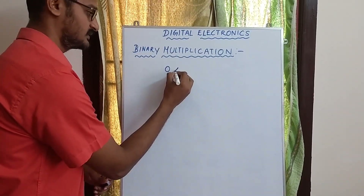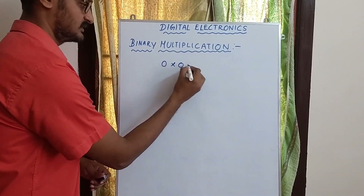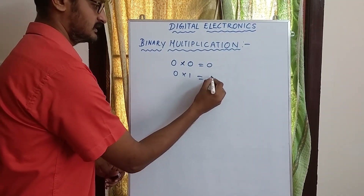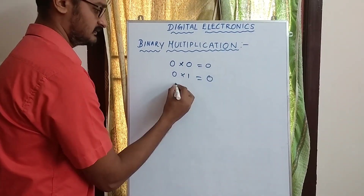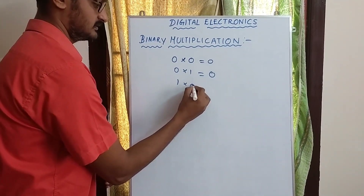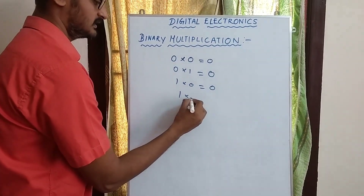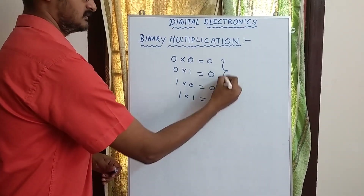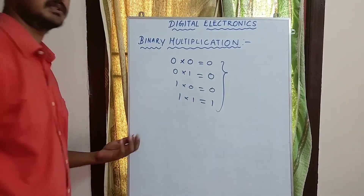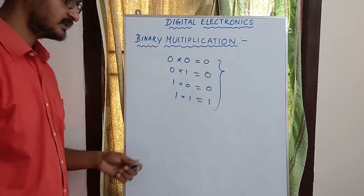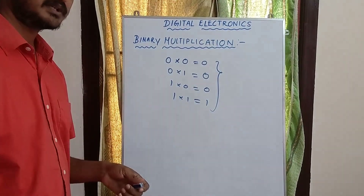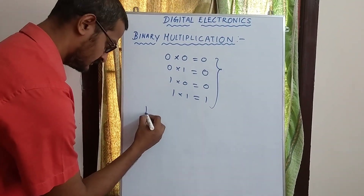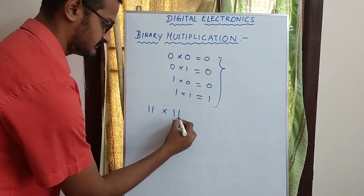The basic binary multiplication rules are: 0 into 0 is 0, 0 into 1 is 0, 1 into 0 is 0, and 1 into 1 is 1. So this is very simple. We are going to talk about Binary Multiplication. So 11 into 11.